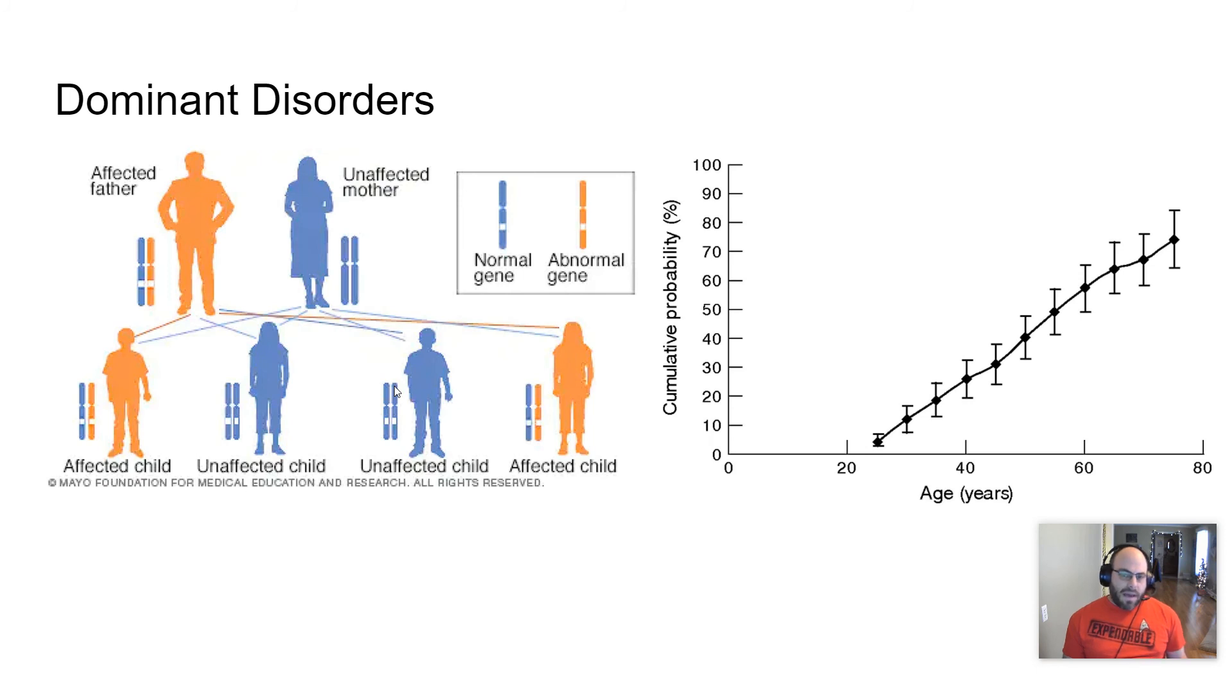And it doesn't always express itself until later in life, but it's still always passed. And there's this idea called penetrance, which after a certain age you will definitely express that disease. And so you can see here, the younger an individual is, the less likely they are to express it. But as they get older, there's a really high likelihood that they will develop that disorder and then have it.